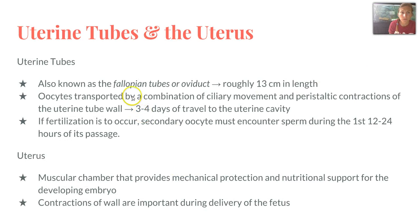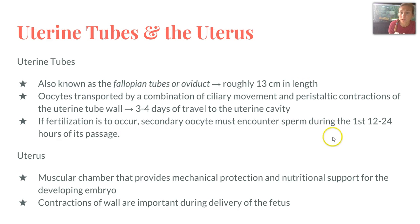The uterine tubes, also known as fallopian tubes or oviducts, are roughly 13 centimeters in length. Oocytes are transported by a combination of ciliary movements and peristaltic contractions of the uterine tube wall. It takes about three to four days to travel to the uterine cavity. If fertilization is to occur, the secondary oocyte must encounter sperm within the first 12 to 24 hours of the passage. If not, they basically degenerate and disappear over time.